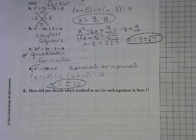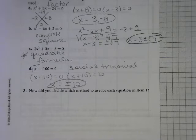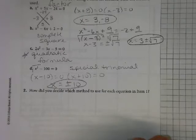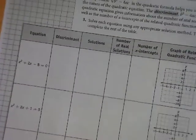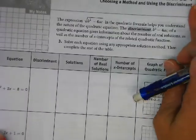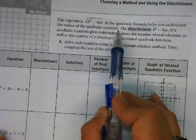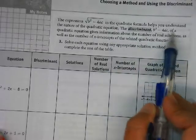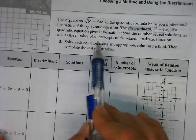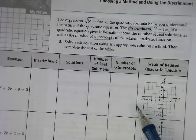Today we're not finding the exact roots. Today we are finding just how many there are going to be. So we're going to turn this page. The expression the square root of b squared minus 4ac in the quadratic formula helps you understand the nature of the equation. The discriminant, which is that piece inside, gives the information about the number of real solutions as well as the x-intercepts in the quadratic.